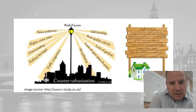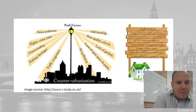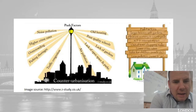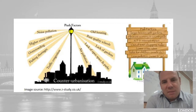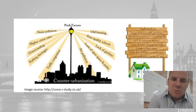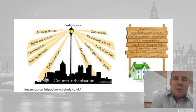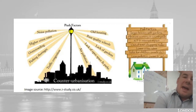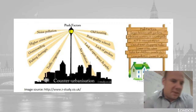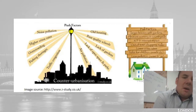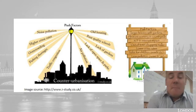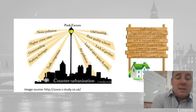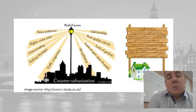We can look at some push and pull factors. The push factors from urban areas include old housing, poor schools, lack of gardens, lack of open space and parks, air pollution, noise pollution, traffic congestion, parking shortages, overcrowding, and higher crime rates.